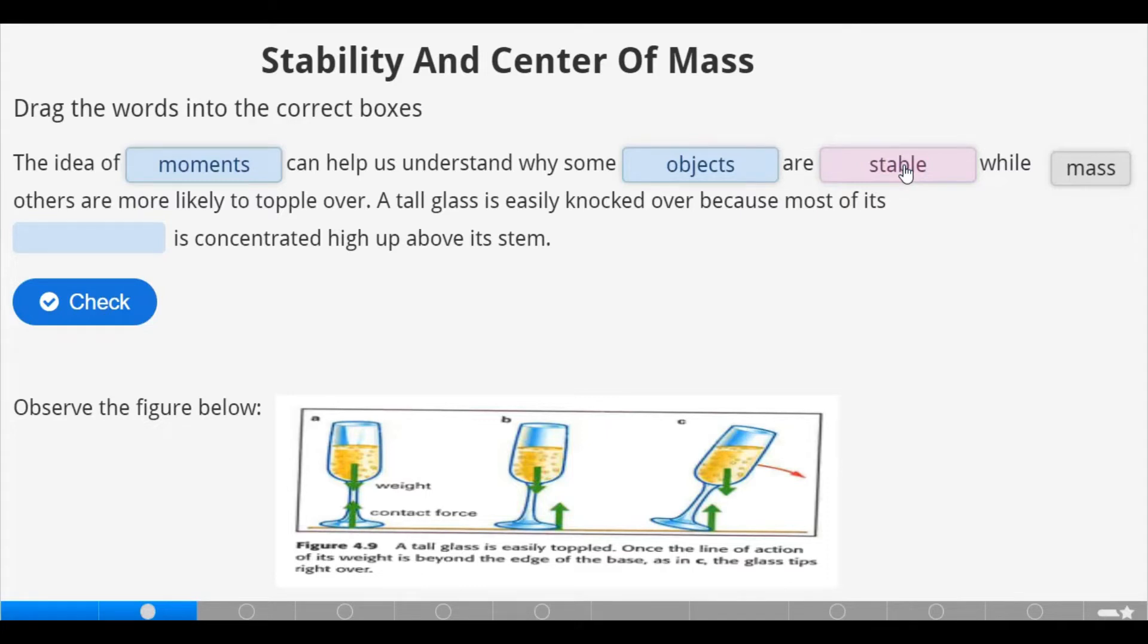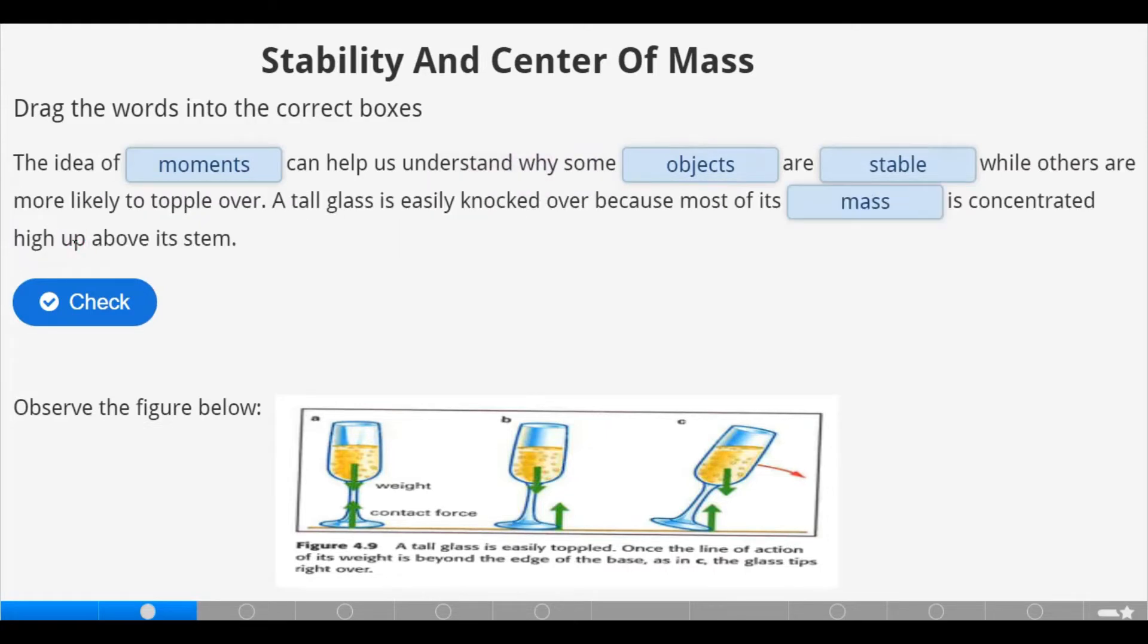The top glass is easily knocked over because most of its mass is concentrated high up above its stem. So this really gives us the definition of stability and center of mass. So we check.